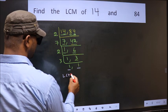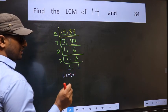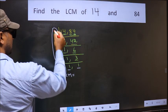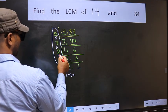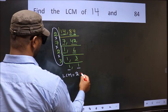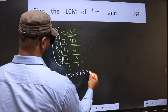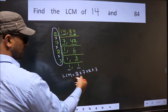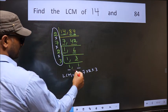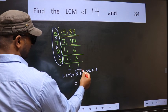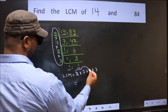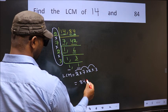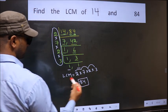So our LCM is the product of these numbers. That is 2 times 7 times 2 times 3. Let us multiply: 2 times 7 is 14, times 2 is 28, times 3 is 84. So 84 is our LCM.